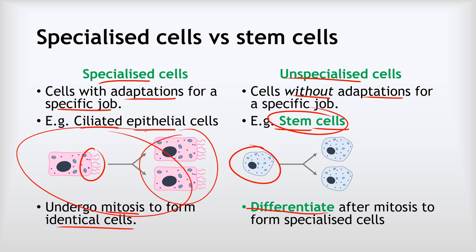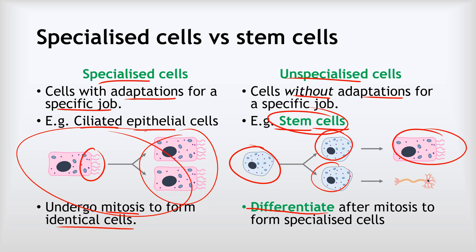Starting with a stem cell, it divides by mitosis to make two new cells. Shortly after mitosis, they differentiate: one might develop new features to become a ciliated epithelial cell, while the other develops features to become a nerve cell. That's where all the different kinds of cells in your body come from — differentiation that only unspecialized stem cells are able to do.